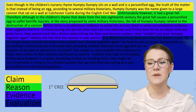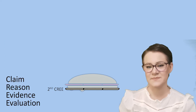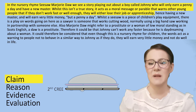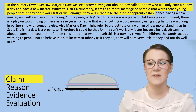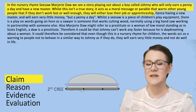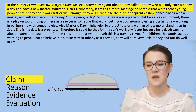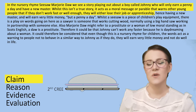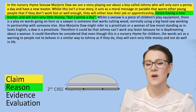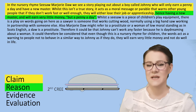Moving on to the second CREE paragraph, I have written: 'In the nursery rhyme Seesaw Margery Dore, we see a story playing out about a boy called Johnny who will only earn a penny a day and have a new master. Whilst this isn't a true story, it acts as a moral message or parable that warns other young people that if they don't work fast or well enough, they will either lose their job or apprenticeship — hence having a new master — and will earn very little, but a penny a day.'